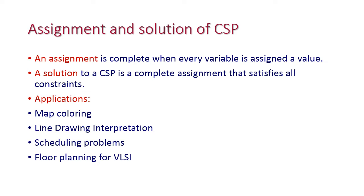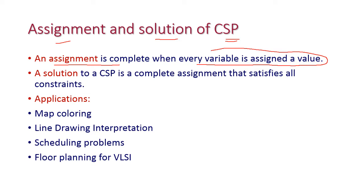What is an assignment, and what is a solution in CSP? When the assignment is complete — that is, all variables are assigned a value — this is called an assignment. A solution means all the assignments must satisfy all the constraints. If there are three different constraints, each assignment must satisfy all three constraints to reach the solution.